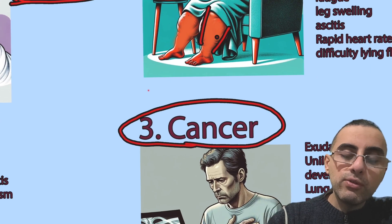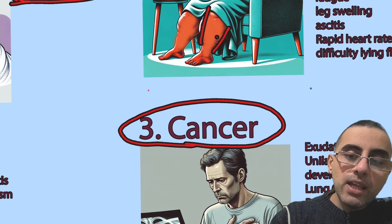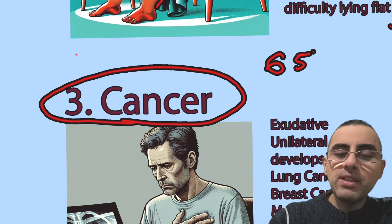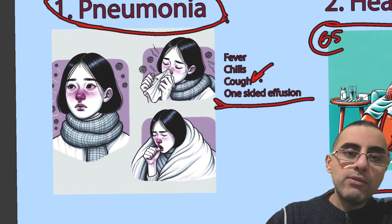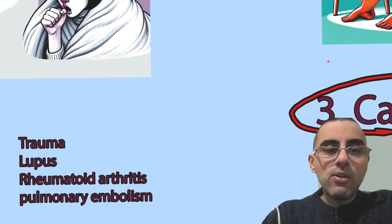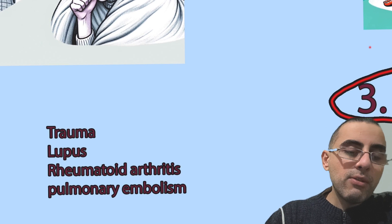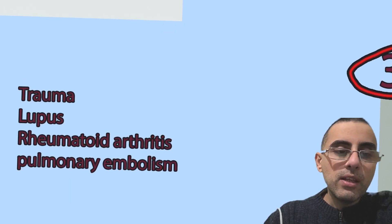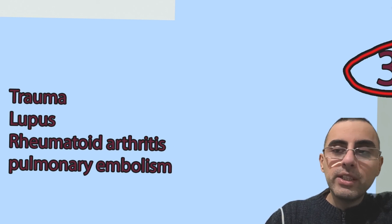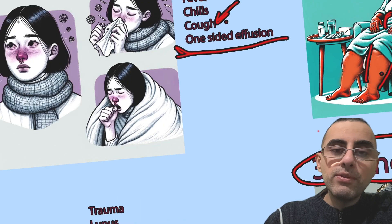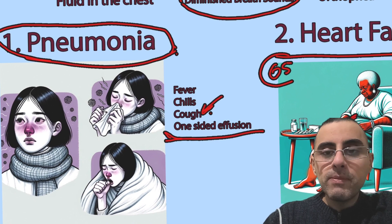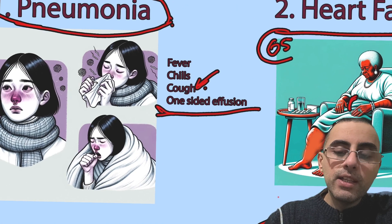Cancer cases are more common after age 65; before 65 it is very rare, and before 65 pleural effusion is usually due to pneumonia. Other conditions can also cause pleural effusion, such as trauma, autoimmune disorders like systemic lupus erythematosus or rheumatoid arthritis, or pulmonary embolism. The most common cause overall is pneumonia, the second most common is heart failure, and cancer is also a major cause.